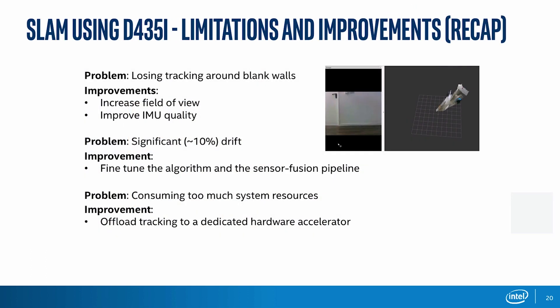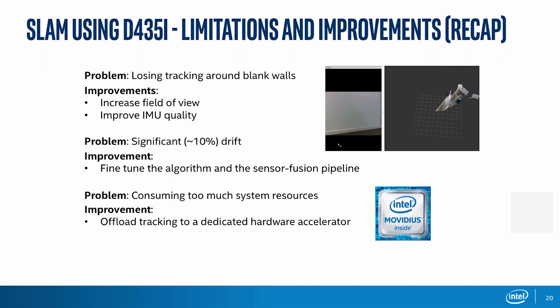Nevertheless, this approach has a few limitations in terms of SLAM. One is robustness — for example, degenerate configurations such as blank walls. With a 90-degree field of view, one straightforward improvement is to increase the field of view, which is what we did with the T265. Another important reason is that this algorithm takes a lot of compute — it may be one of the heaviest workloads on your host. So we were interested in offloading that, in this case directly onto the camera with the Movidius.